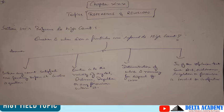Coming on to Chapter 30 of Code of Criminal Procedure, we will talk about the topic of Reference and Revision. Chapter 30 mein Section 395 ke baare mein hum aaj baat karenge.